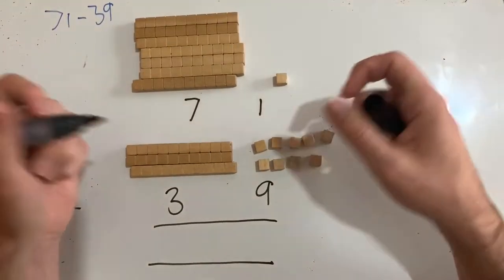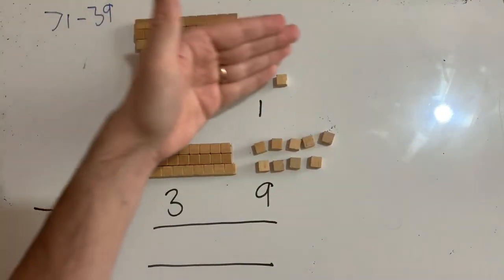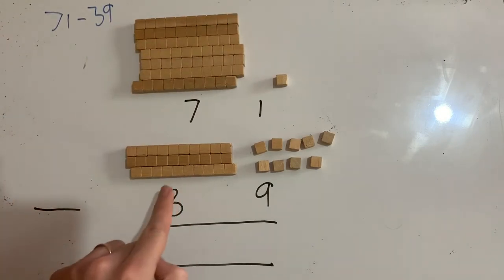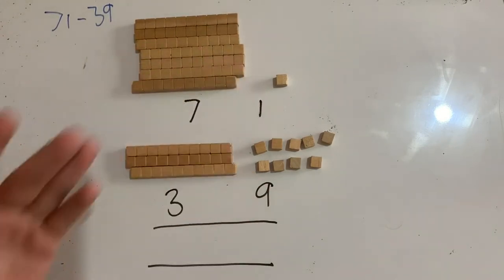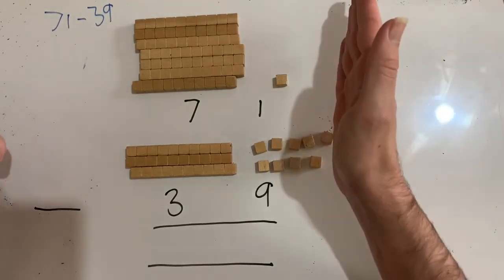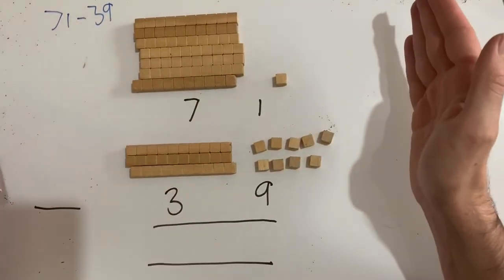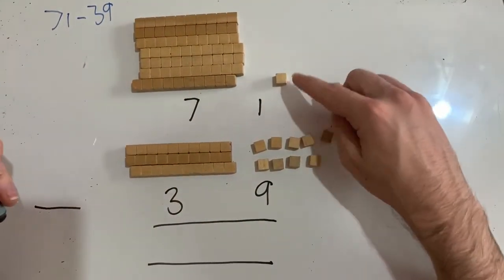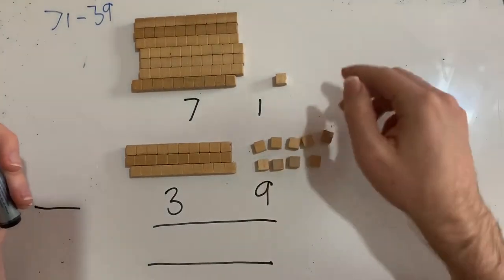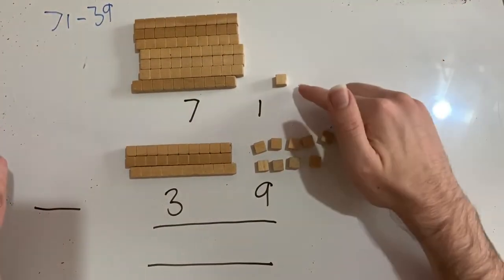I have got here 71. So seven tens, one unit minus 39, so three tens and nine units. Now I'm going to work from right to left, as I always do with standard notation, and I'm going to take nine from one. Oh, I've got a problem here because how do I take nine from one?